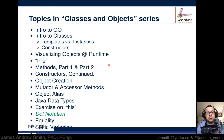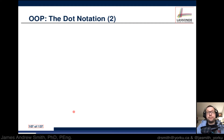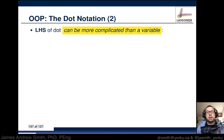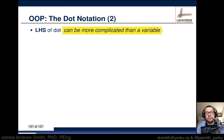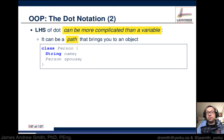Let's move on to a discussion about the dot notation. It turns out the dot notation is super useful and super commonly used in Java. The left-hand side of the dot can be a little bit more complicated than just a variable — you can do a lot more with it. It's basically a path that brings you to an object.